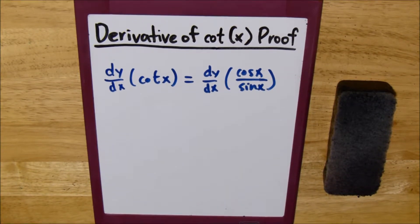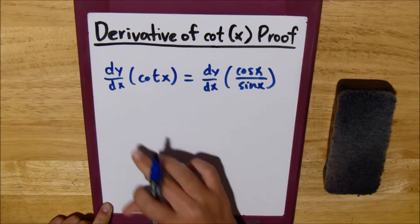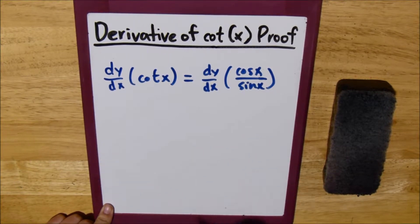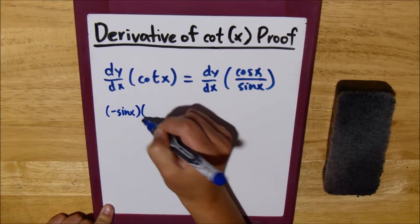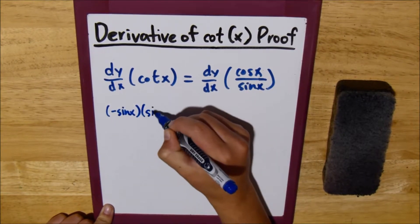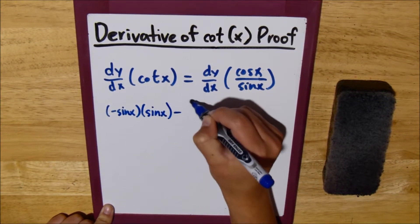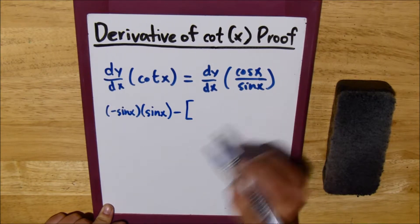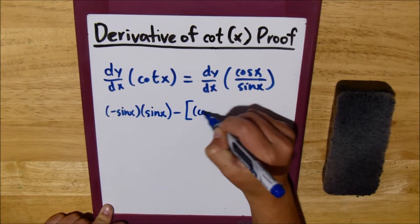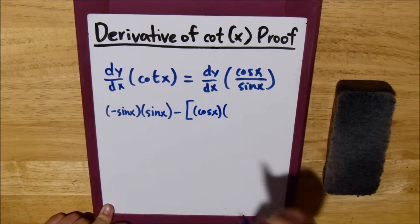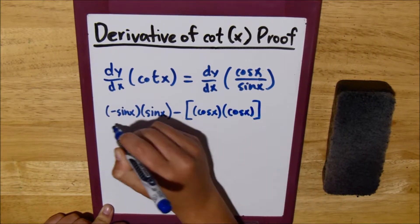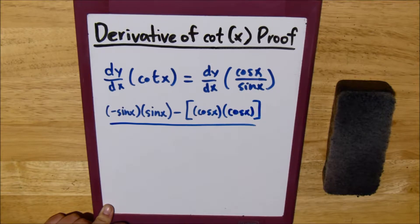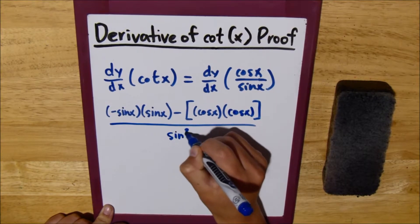Then we use the quotient rule to derive this. Take the derivative of the numerator, which is negative sine x, multiply it by the denominator, sine x. Subtract the derivative of the denominator, cosine x, and multiply that by the numerator, cosine x. All of this over the denominator squared, sine squared x.